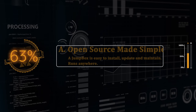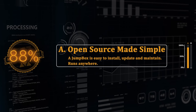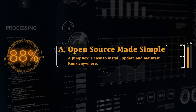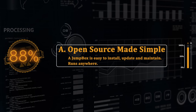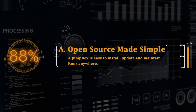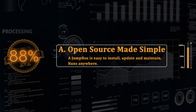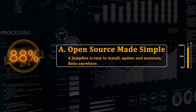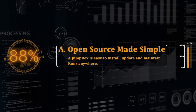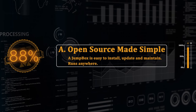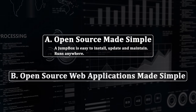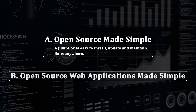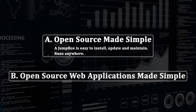The result of the case study: 88%. The treatment — this is the winning version. Second, open source made simple: a jump box is easy to install, update, and maintain. Runs anywhere. The control: open source web applications made simple — and there's no subheadline.